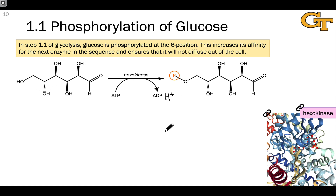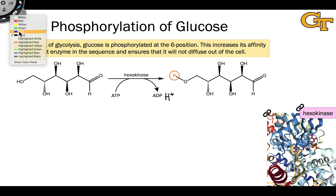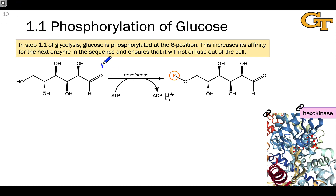This is the fate of the hydroxyl hydrogen — it becomes a proton that finds its way out into solution. This reaction is catalyzed by the enzyme hexokinase, and you can see an image of the active site of hexokinase here with glucose-6-phosphate in the active site. You can see the phosphate group and the six-membered ring characteristic of the cyclic form of glucose. Here I'm using the open chain form to make it easier to see the fates of the carbons as we move through this pathway.